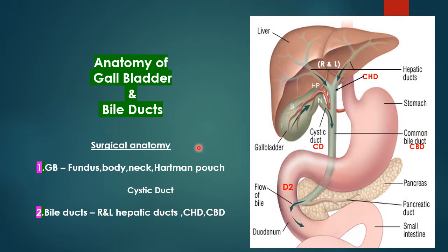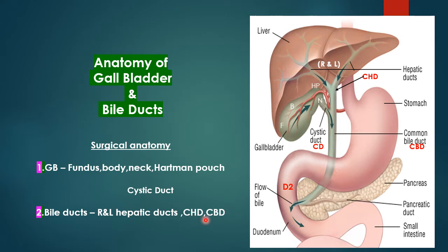The biliary system consists of two parts: the gallbladder and the bile ducts. The gallbladder consists of the fundus, body, neck, Hartmann's pouch, and the cystic duct. The bile ducts consist of the right and left hepatic ducts, the common hepatic duct, and the CBD. These two systems are connected by the cystic duct, as shown in this diagram.